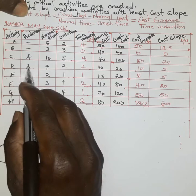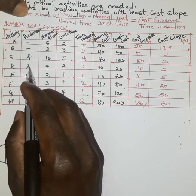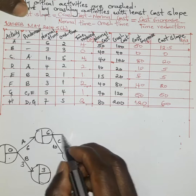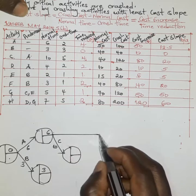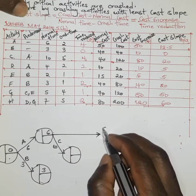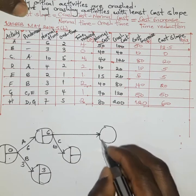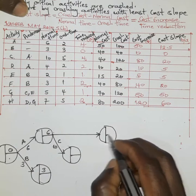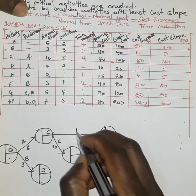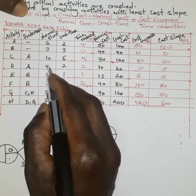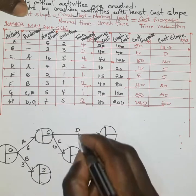Activity D also begins as soon as activity A ends, taking a duration of four weeks.